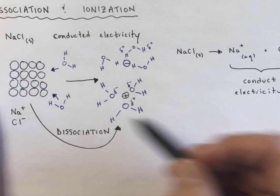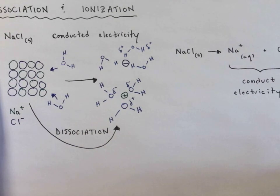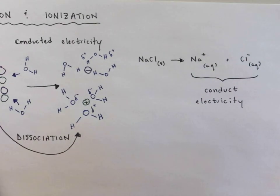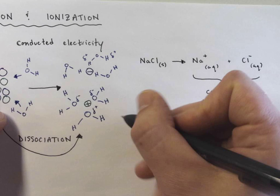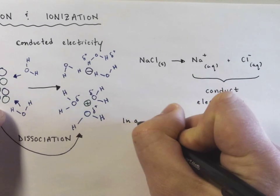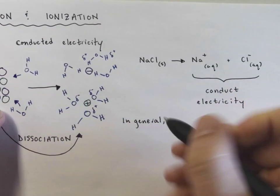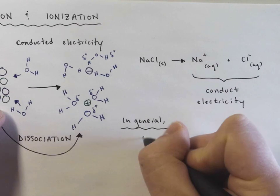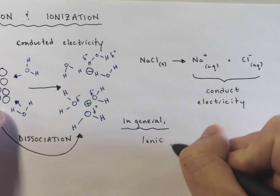So this is what we call dissociation. Dissociation is usually, we're usually going from an ionic compound to ions. So in general, I have an ionic compound.